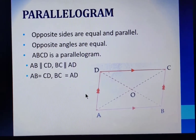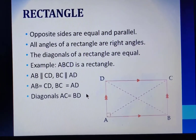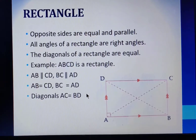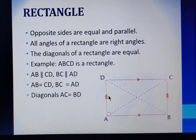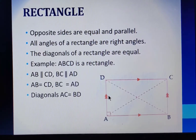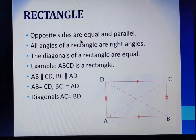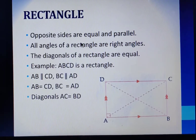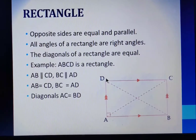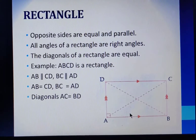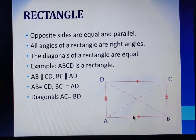Now, let us see the next type of quadrilateral, that is rectangle. A rectangle is a type of quadrilateral as it has 4 sides, as well as a rectangle is a kind of parallelogram also. In a rectangle, opposite sides are equal and parallel, just like a parallelogram. In a rectangle, we also have all the angles as right angles — that is, angle A, angle B, angle C, and angle D will be equal to 90 degrees. So in rectangle ABCD we will have AB equal to CD, and BC equal to AD.